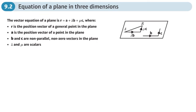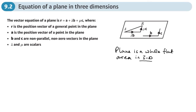This is the second section of the vectors chapter, and here we look at the equation of a plane in three dimensions. So remember, a plane is a whole flat area in 3D, whereas a line was just a line in 3D. The vector equation of a line in three dimensions is given as this.